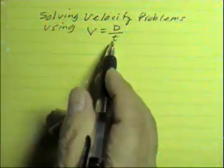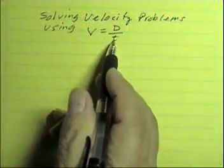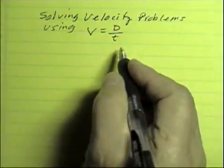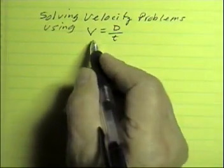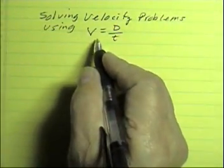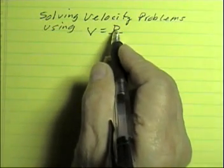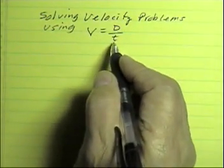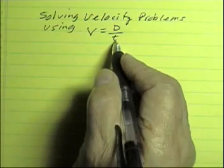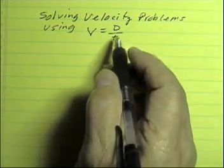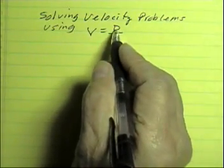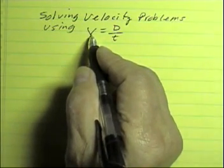Velocity equals displacement divided by time. There are actually three ways to use this equation. You can use the equation to solve for velocity, obviously. You can also use the equation to solve for displacement if you know the velocity and the time. And you can use this equation to solve for time if you know the displacement and the velocity.